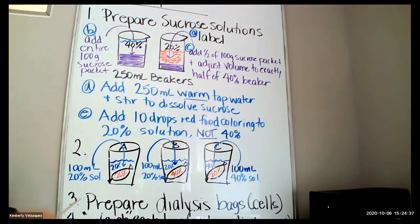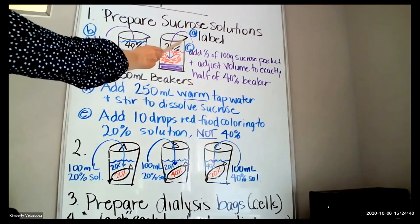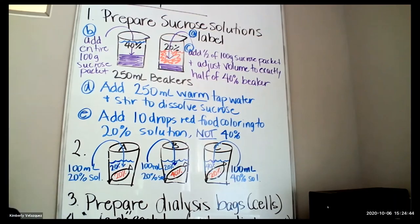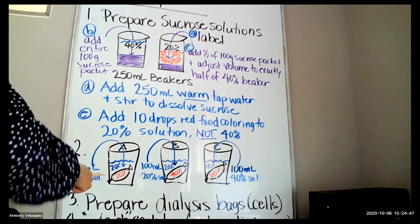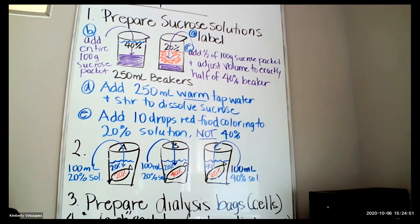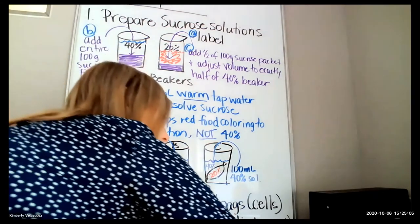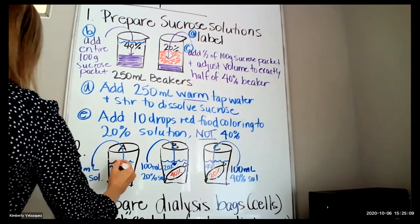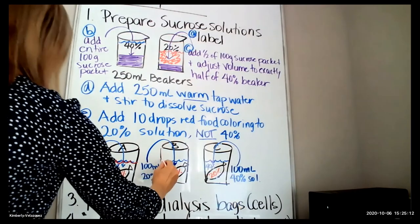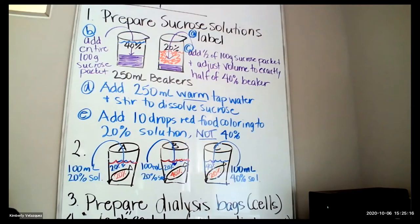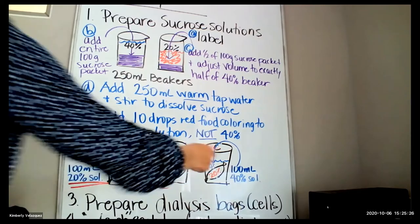In cup A, you're going to add 100 milliliters of your 20% solution — pour it from the beaker into a graduated cylinder and then into the cup. Be very precise, using your pipette to get exactly 100 milliliters of the 20% sucrose solution. That will be red. You'll also put 100 milliliters of the 20% solution in cup B — also red. In cup C, you're using the 40%, so it won't be red — 100 milliliters of the 40%.